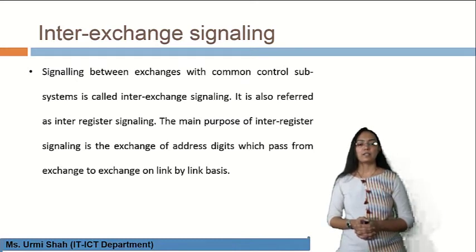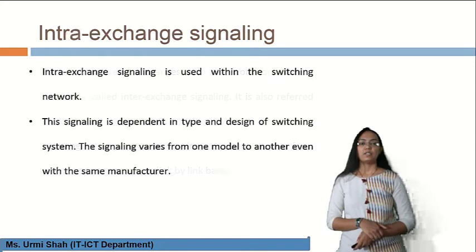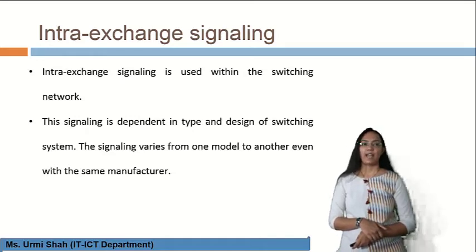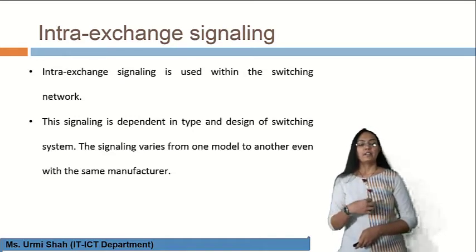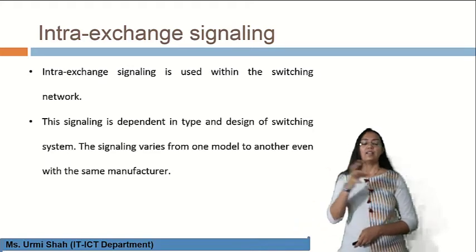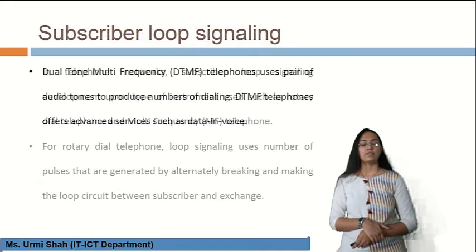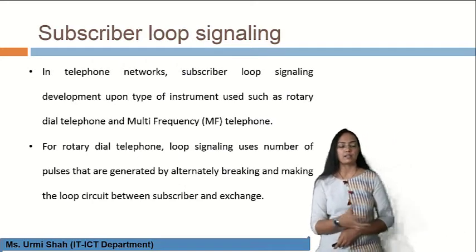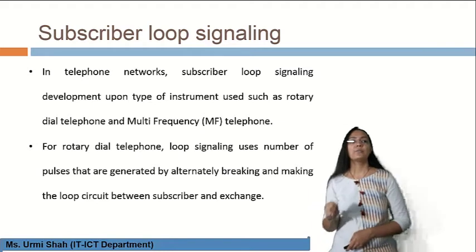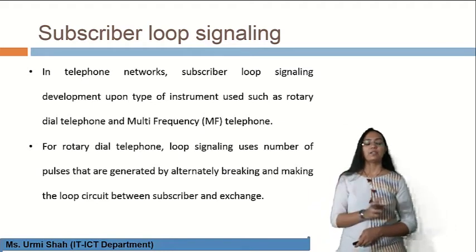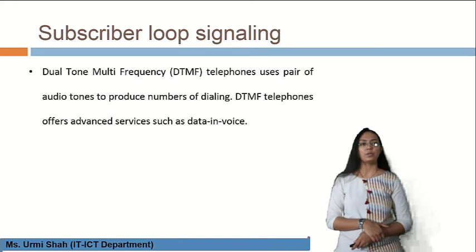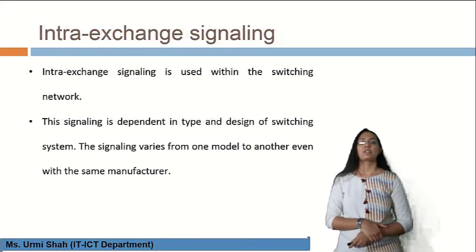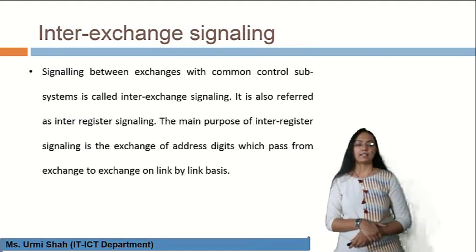The basic purpose of intra-exchange signaling is the internal transfer of information. In inter-register signaling, the signaling is dependent and enables transmission between one switching model and another. In contrast, subscriber loop signaling involves a telephone form where signal transfer is based on the subscriber loop concept. These are the three different types of signaling schemes.